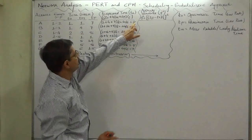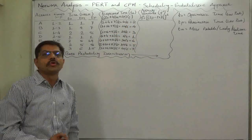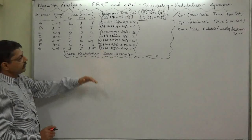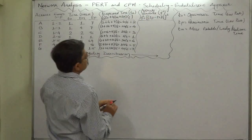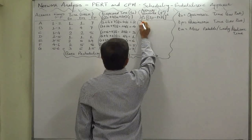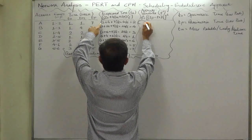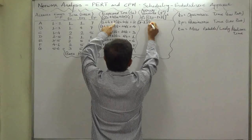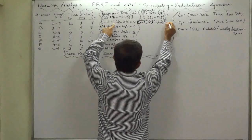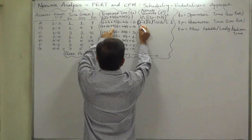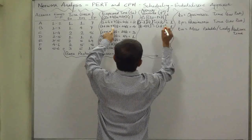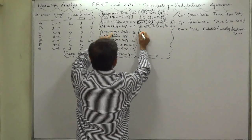We can expect activity A to be completed in 2 weeks, activity B in 4 weeks, and so on. Now let's calculate the activity variance — the variance of time for all activities. According to the beta probability distribution, the formula is: Variance = ((TP − TO) / 6)². For activity A: (7 − 1) / 6 = 6/6 = 1, squared = 1. For activity B: again (7 − 1) / 6 squared equals 1. For the next: (8 − 2) / 6 squared equals 1.